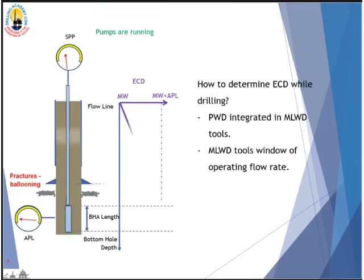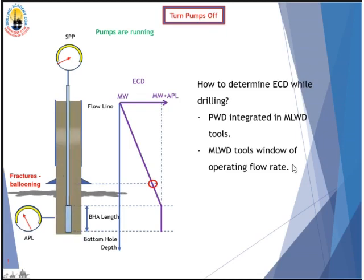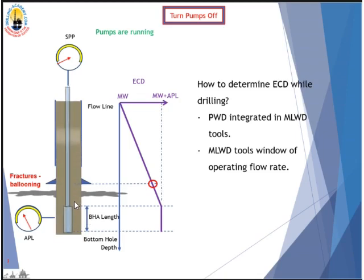How do we determine ECD downhole? On the BHA we have MWD/LWD tools. They usually have the PWD function incorporated. So we take the PWD reading, which gives us ECD. And sometimes, if the BHA has a battery, it will give the reading of ESD — Equivalent Static Density — when the pumps are off. Remember, all MWD/LWD tools have a window of operating flow rate. If you pump below the operating flow rate, you won't see any pulse or signal from the tool and you won't have the PWD reading. Make sure you pump at the operating flow rate or a bit higher so the tool is powered up and you get a good reading.